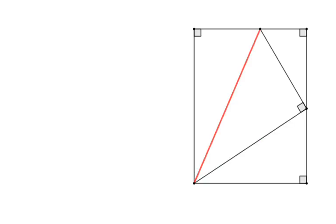Here is the rectangle, and we have one giant red segment there. That red segment has to have a length of one for this whole thing to work out. Now what we're going to do is a little bit of angle chasing. I'm going to name two of the angles — I'm going to give this one measure x and this angle measure y.